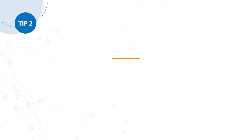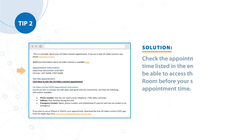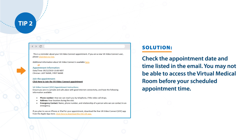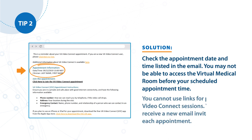Tip number two. Problem: My appointment link won't work. Solution: Check the appointment date and time listed in the email. You may not be able to access the virtual medical room before your scheduled appointment time. You cannot use links for past VA Video Connect sessions. You will receive a new email invitation for each appointment.